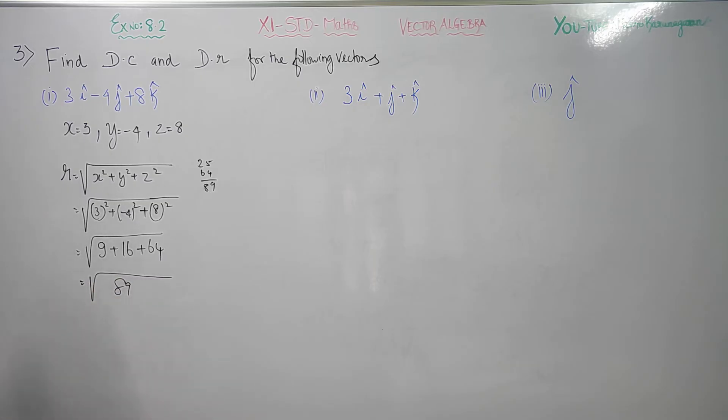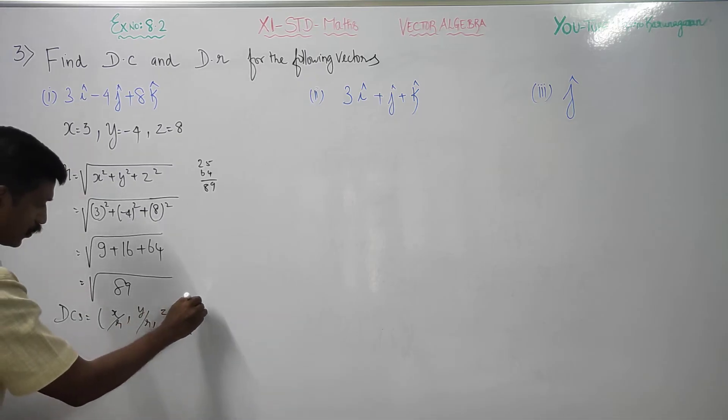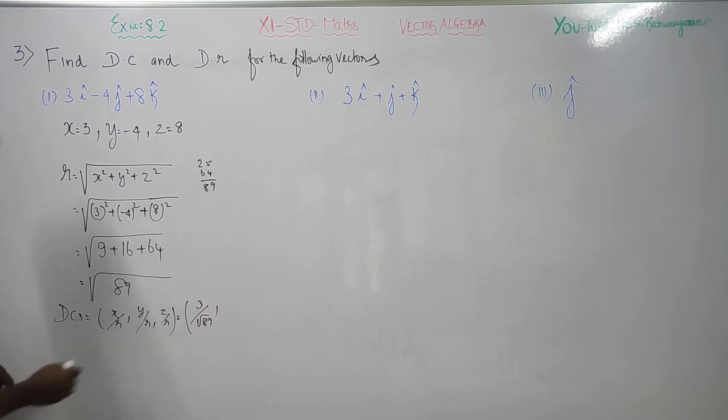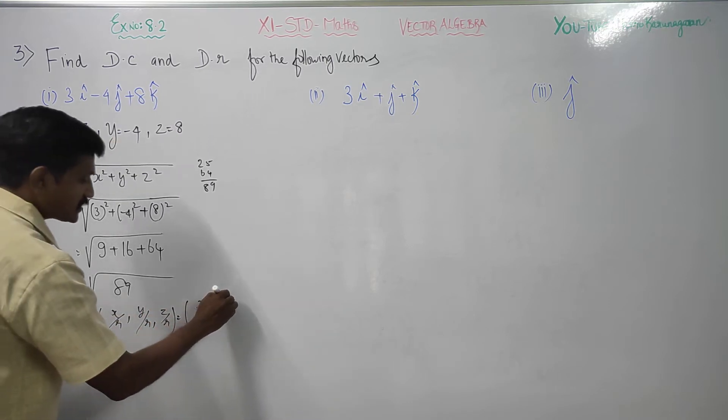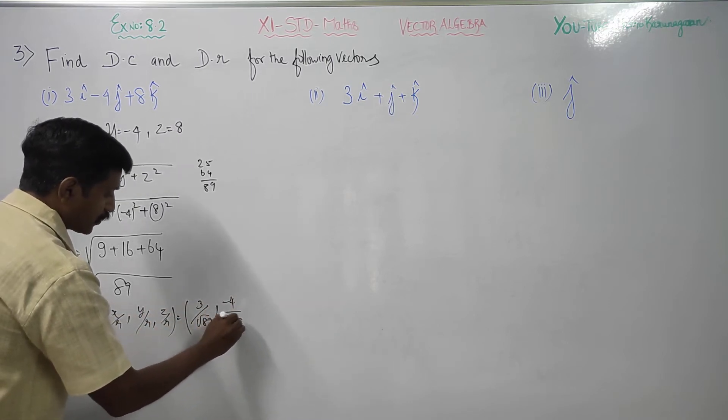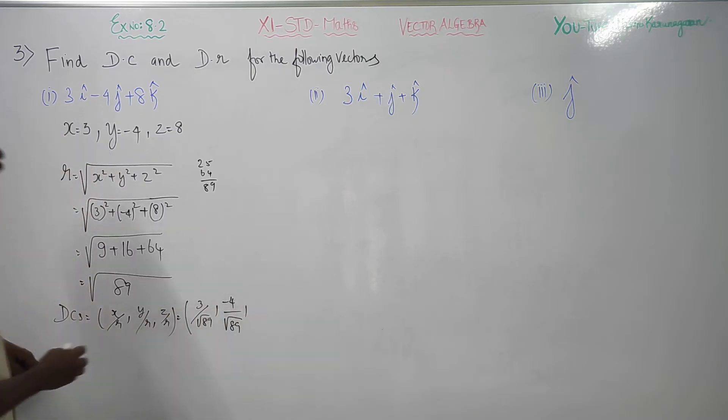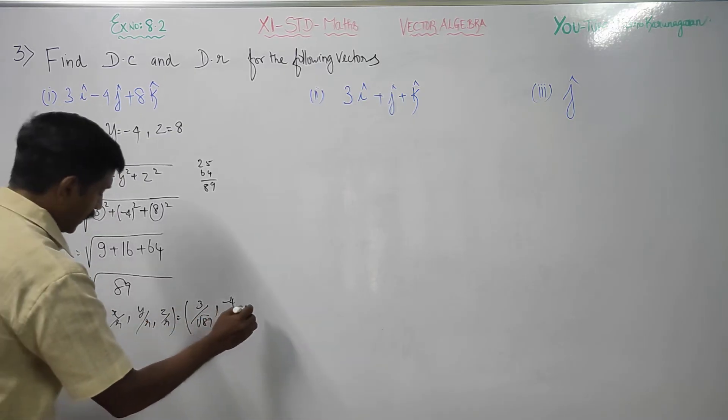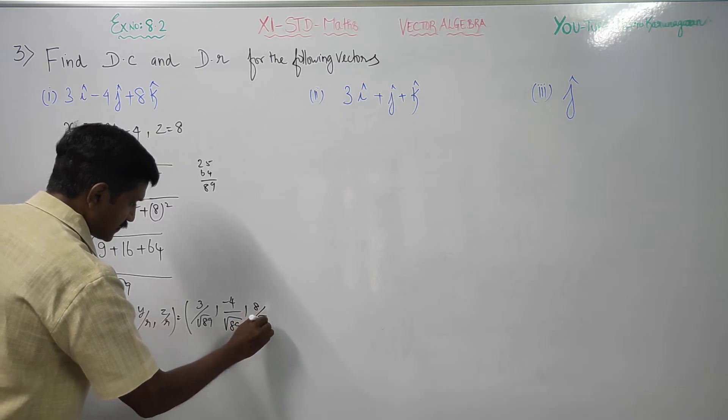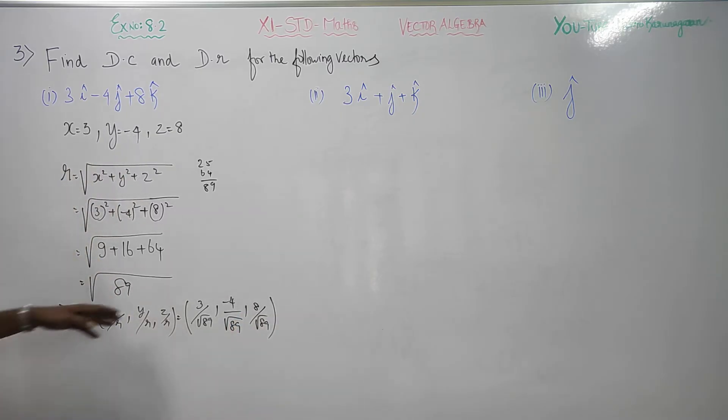First direction cosines. Direction cosines are x by r, y by r, z by r. Therefore my answer will be 3 by root 89, comma, then minus 4 by root 89, comma, then 8 by root 89. This is my direction cosines.